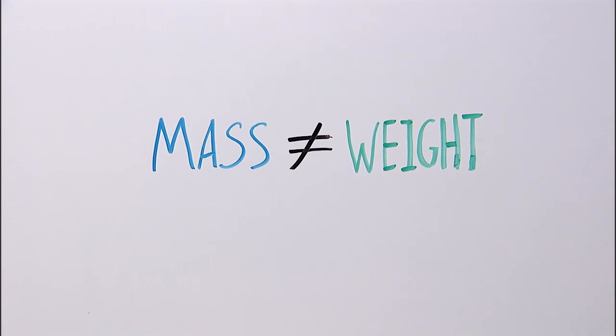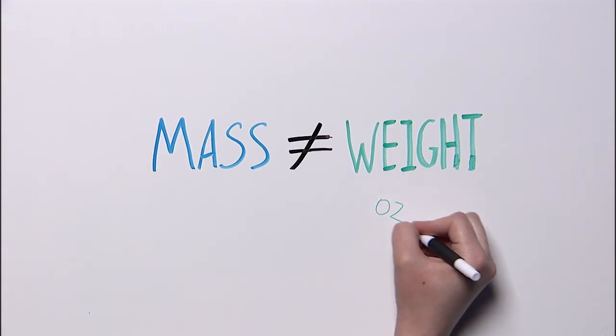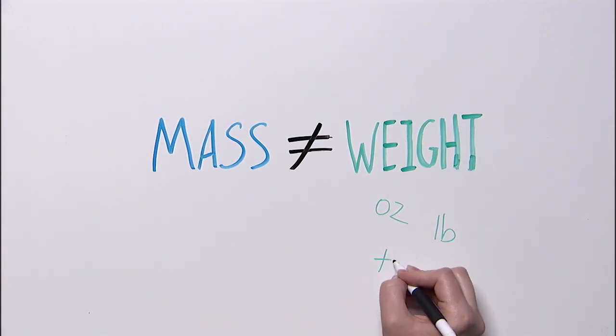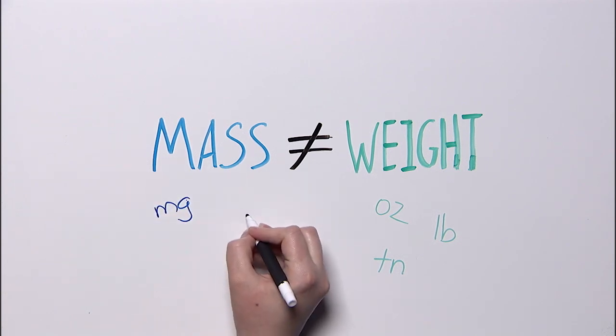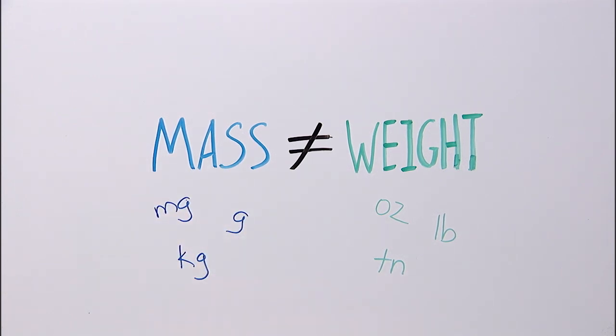Weight, for example, is usually measured in customary units: ounces, pounds, and tons. Mass is usually measured in metric units: milligrams, grams, kilograms, etc.